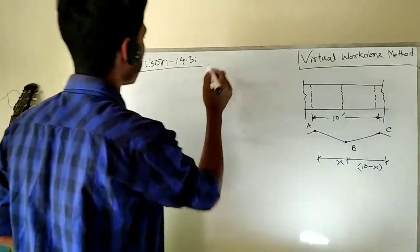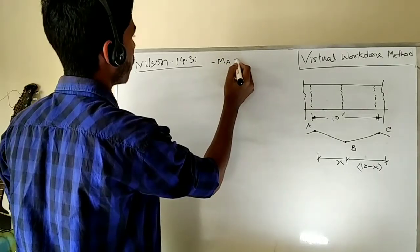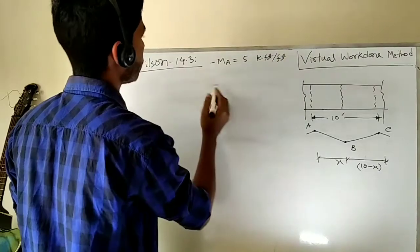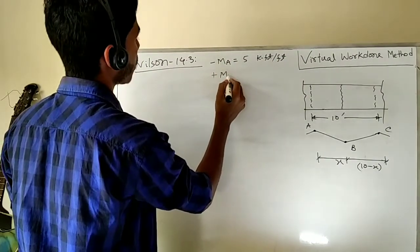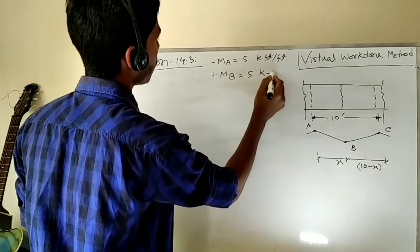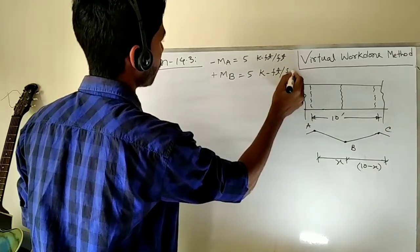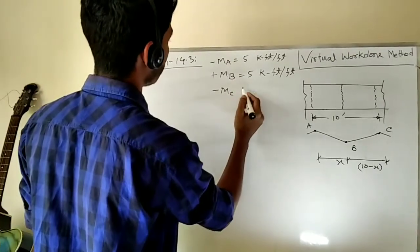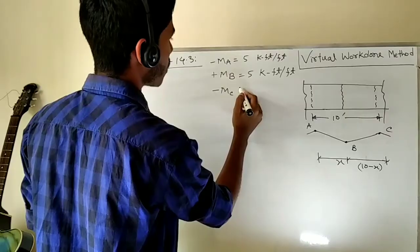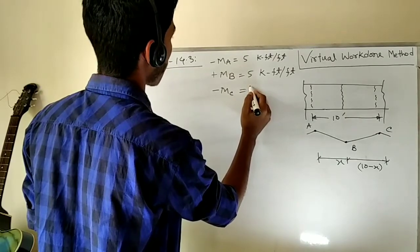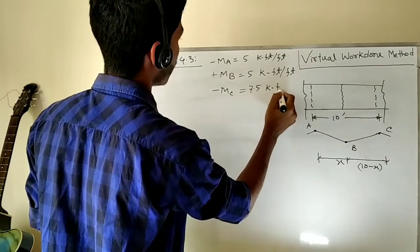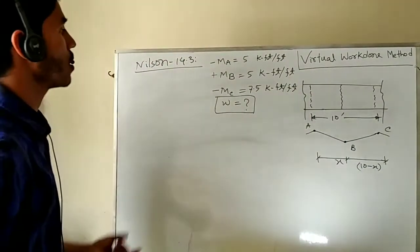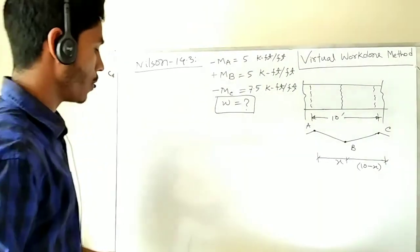The given information includes: negative bending moment at A equals 5 kip-feet per feet; positive bending moment at B equals 5 kip-feet per feet; and negative bending moment at C equals 7.5 kip-feet per feet. We have to find the load resisting capacity of the slab, w, in kips per feet.